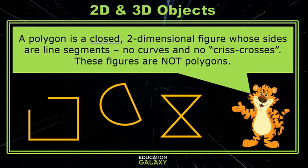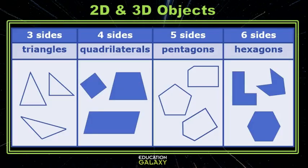Remember a polygon is a closed two-dimensional figure whose sides are line segments, no curves and no criss-crosses. These figures are not polygons. Let's look at some examples and some special names of different polygons.